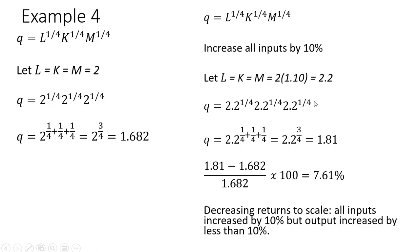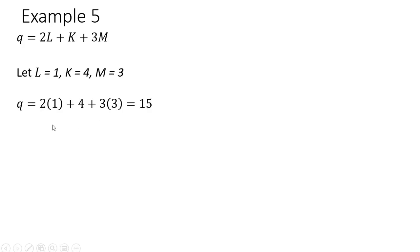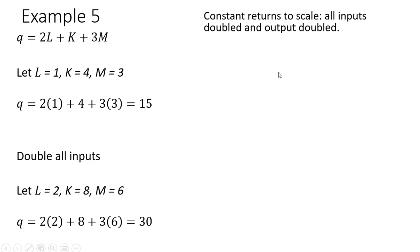Example 5. We have a slightly different production function, linear in the inputs. Let's let L equal 1, K equal 4, and M equal 3 — I just want to show that we don't have to set all inputs equal to the same value. Plugging those values in, we get 15 units of output. Now doubling all inputs: L equals 2, K goes from 4 to 8, and M goes from 3 to 6. Plugging those in, output is 30 — constant returns to scale, as output exactly doubled.